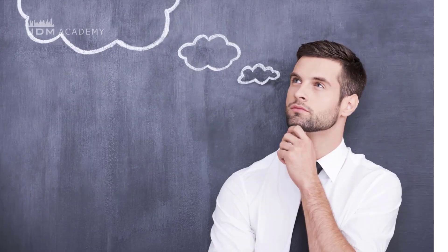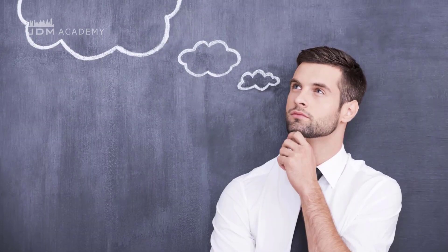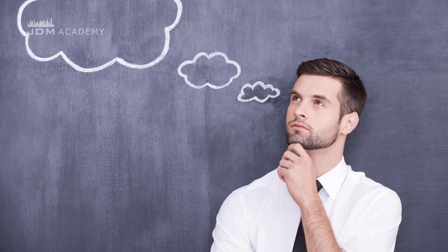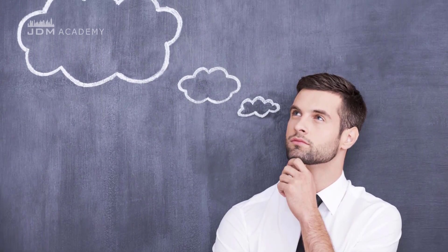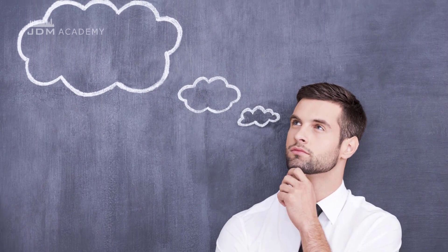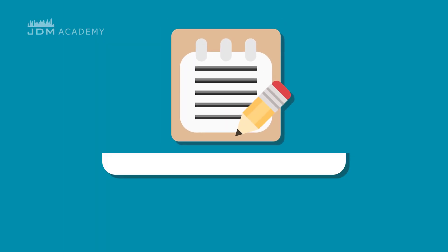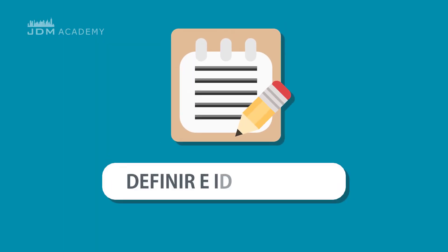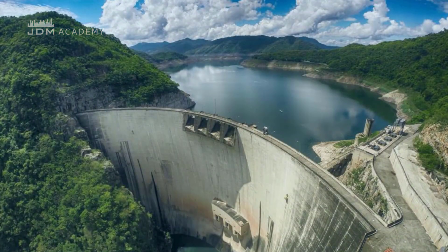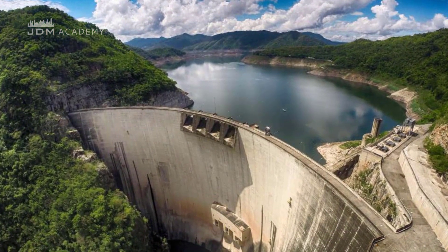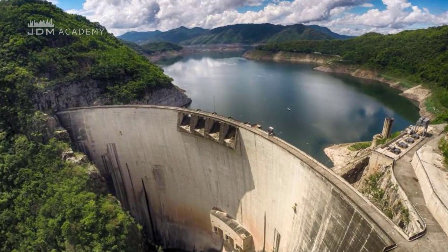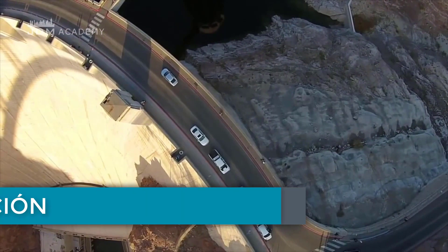To achieve a better view and understanding of the functions of the different types of dams, it is necessary to first define and identify their parts. The most common parts of a dam are: Coronación (Crest) — the upper part of the dam, which usually has a road that allows crossing from one bank to the other.